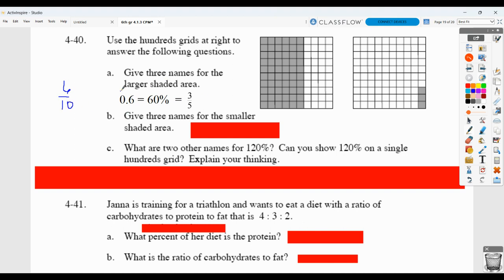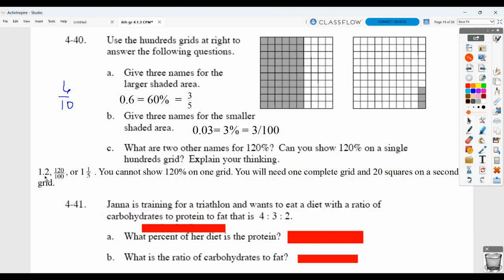So basically, we've got fraction, decimal, percent. And then the smaller one, we have 3 hundredths, which is 3 shaded out of 100. So 3%, which is 3 hundredths as a fraction. What are two other names for 120%? Well, we could think of it as 1 and 2 tenths or 1 and 20 hundredths. We could think of it as 100 and 20 hundredths. We could change it to a mixed number. 1 and 20 hundredths would become 1 and 1 fifth. And you can't show, of course, that on just one grid. You would need a complete grid of 100 and 20 squares on a second grid.